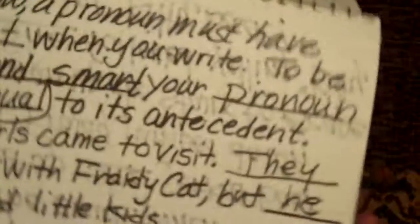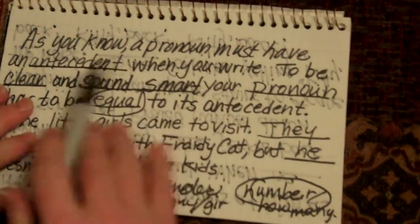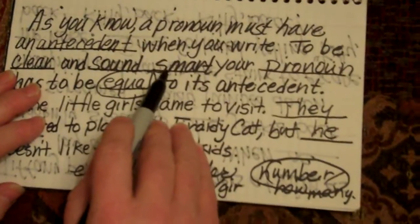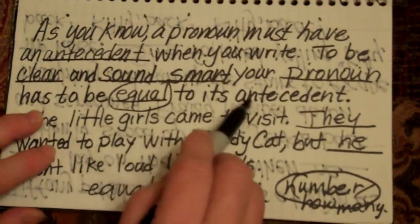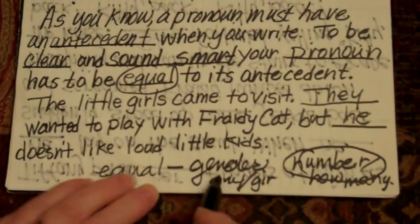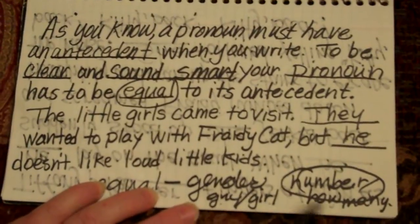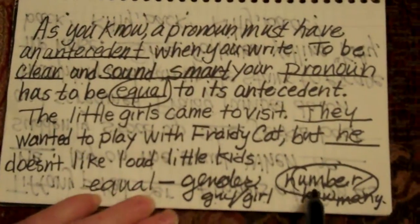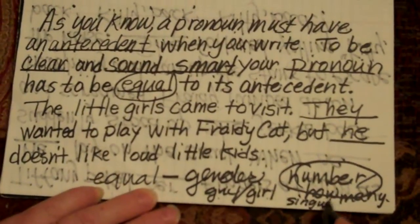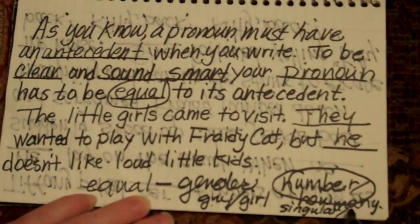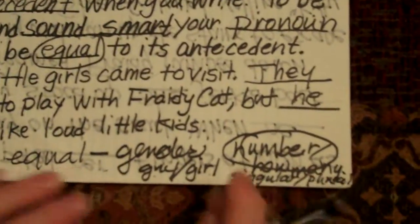So let me just reiterate. The pronoun has to have an antecedent when you write — to be clear and to sound smart. Your pronoun has to be equal to its antecedent. It has to be equal in gender, whether it's a guy or a girl, and it also has to be equal in number — whether it's singular or plural. Okay? Bye now.